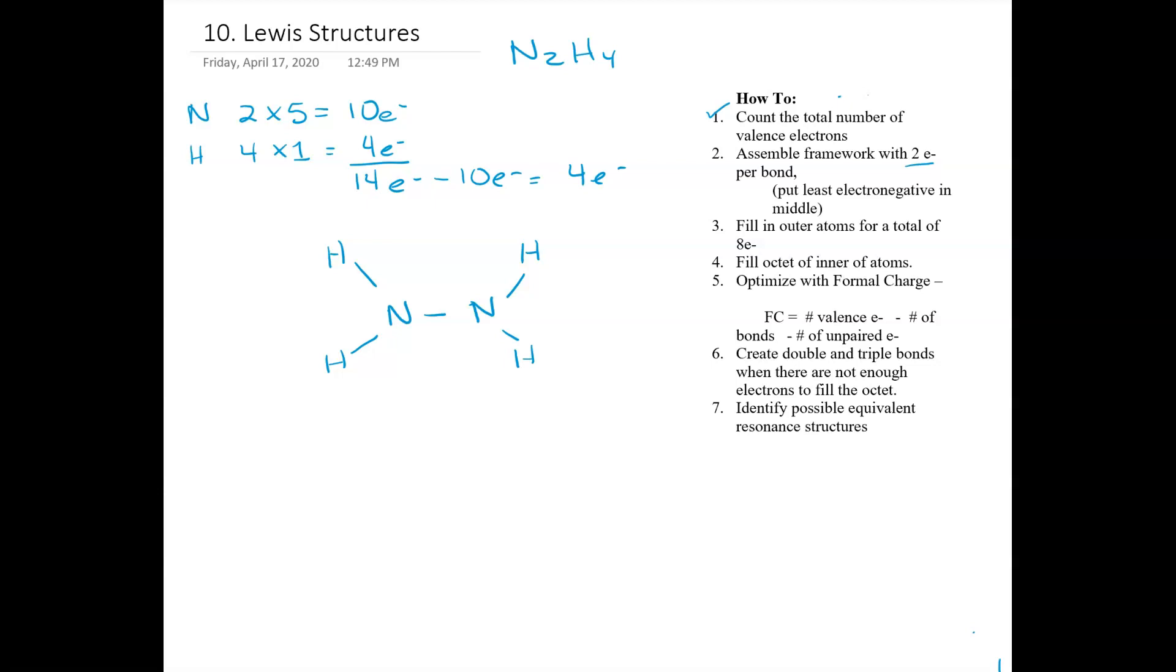Then the next step is to fill the octet of the inner atoms, and I have four electrons left. So I'm going to put two on this nitrogen and two on that nitrogen. So I have now also filled the octet of the inner atoms.